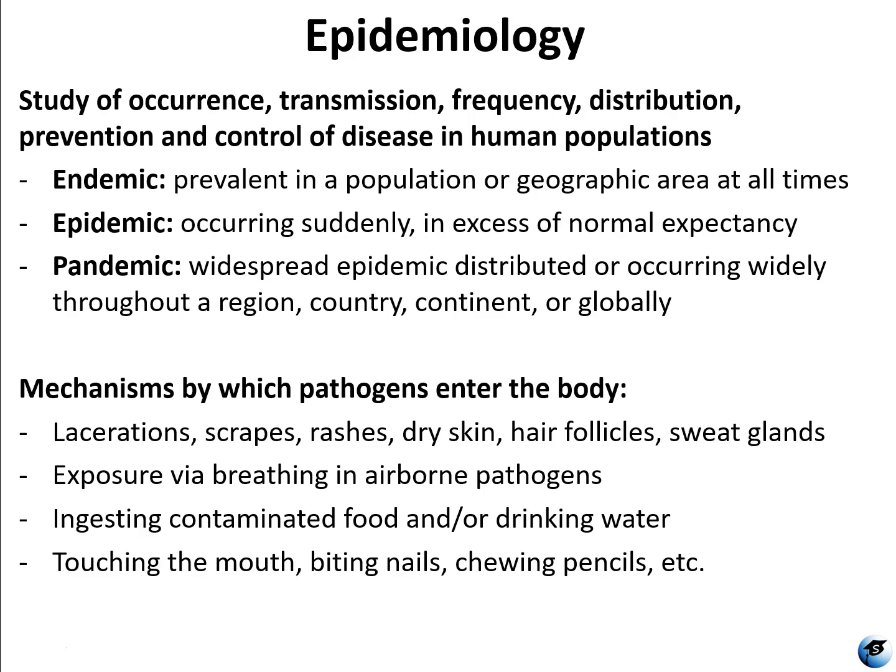Some epidemiological terms to know: Endemic means prevalent in a population or geographic area at all times — it's the baseline, the normal expectancy rate for a disease in a population. Epidemic means occurring suddenly in excess of normal expectancy — an outbreak that spikes above that baseline level. And pandemic is a widespread epidemic distributed or occurring widely throughout a region, a country, a continent, or even the globe.